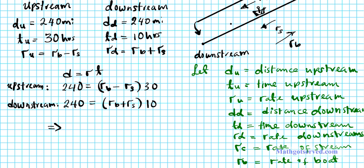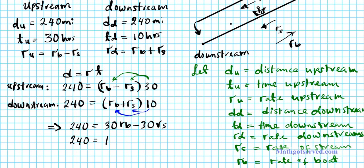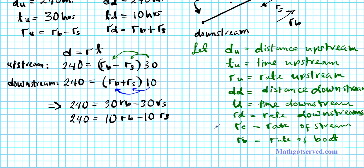Distributing these values, the first equation becomes: 240 equals 30rb minus 30rs. The second equation becomes: 240 equals 10rb plus 10rs. Now we have a system of equations in two variables, namely the rate of the boat and the rate of the stream.